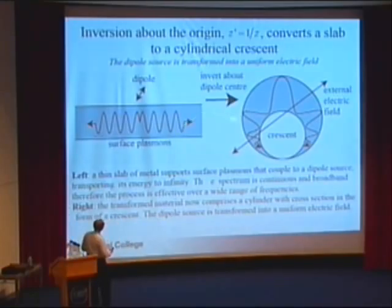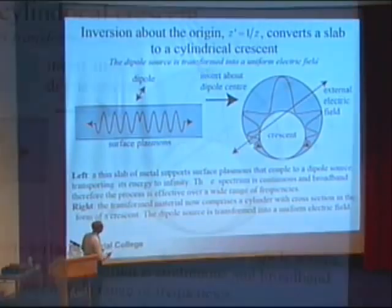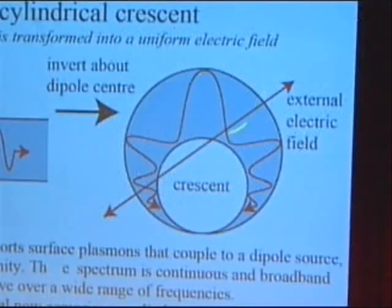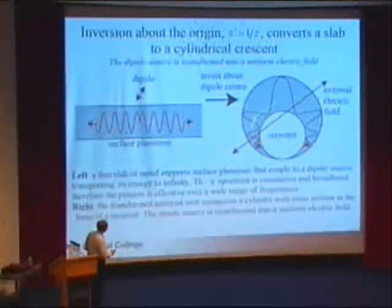The inversion maps infinity to the origin. So these waves, excited by an incident plane wave at the big part of the cylinder, act like a dipole antenna. The waves generated travel around the crescent and accumulate at the origin. The spectral properties are broadband, so you can do this trick over a wide range of frequencies.